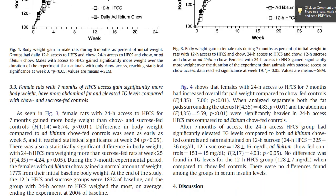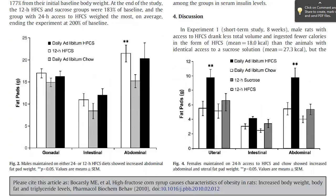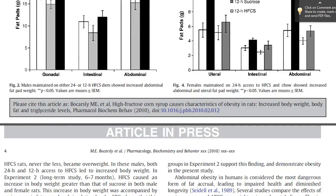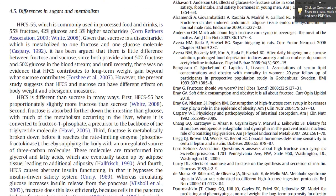Section 4 is the discussion, and it's somewhat subjective interpretation of the results. The authors reflect on the findings and try to synthesize them into the body of literature on the topic. I'm skipping over a lot of information in the interest of time, straight to section 4.5, Differences in Sugar and Metabolism — the area I found most interesting.